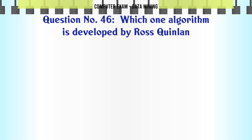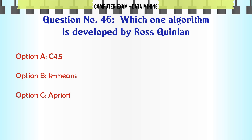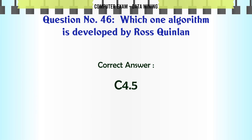Which algorithm is developed by Ross Quinlan? A. C4.5. B. A-means. C. A priori. D. Adaboost. The correct answer is C4.5.